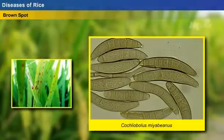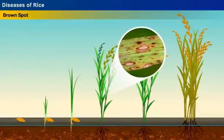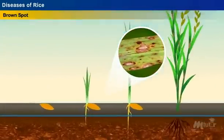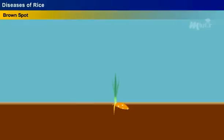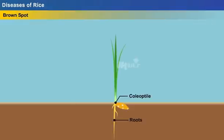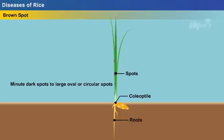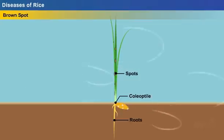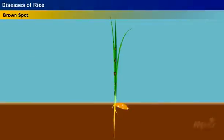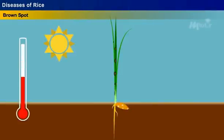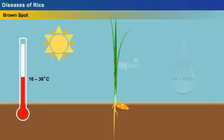Brown spot is caused by the fungus Cochliobolus miyabeanus, formerly known as Helminthosporium oryzae. The fungus affects the plant in all stages of growth, from seedling to the final stage. When a diseased seed is sown, the spores enter the coleoptile and the roots. When the plant grows, the spores develop on the leaf forming spots, which may vary in shape and size from minute dark spots to large oval or circular spots. These spores spread to other leaves and panicles through the wind.